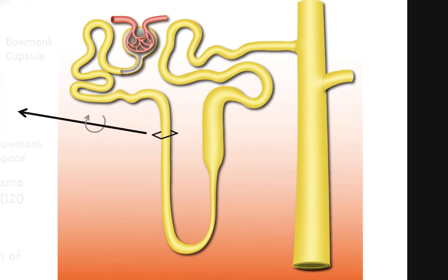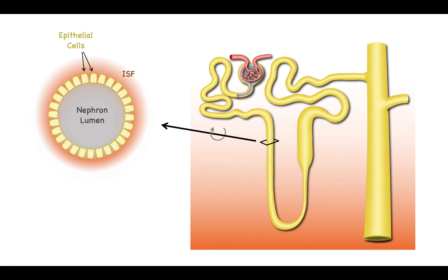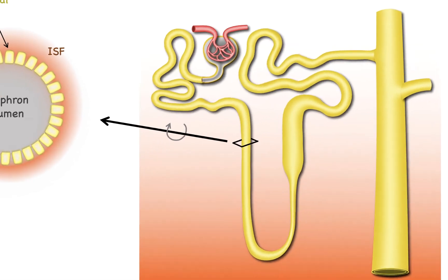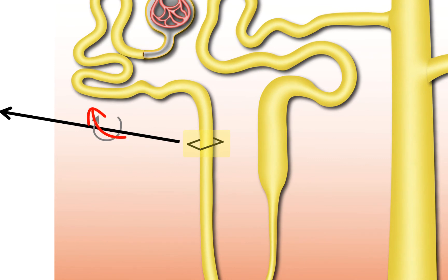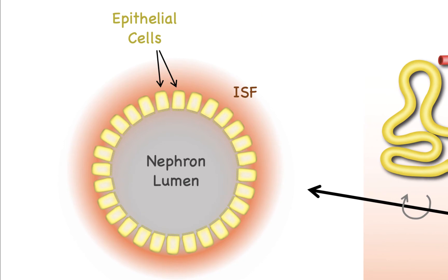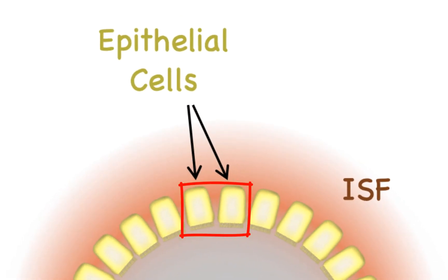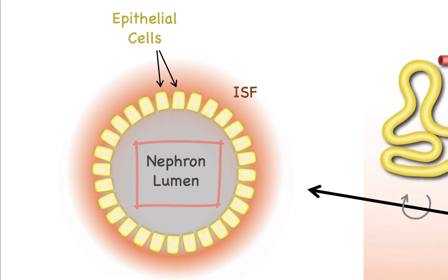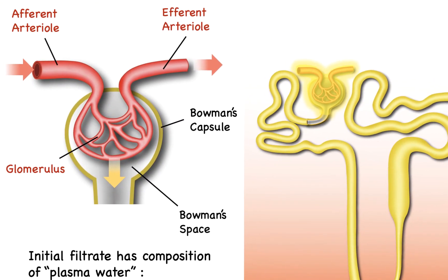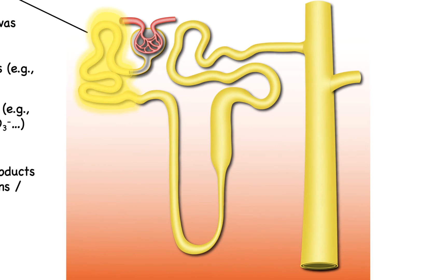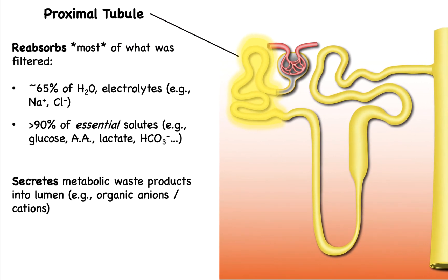Now that we have the initial filtrate formed by the glomerulus, the next steps involve processing that fluid through the various nephron segments. If you were to take a cross-section of the nephron and rotate it 90 degrees, there are three main regions: the nephron lumen or tubular lumen inside, surrounded by a layer of epithelial cells linked by tight junctions, which separates the nephron lumen from the extracellular fluid of the kidneys — the interstitial fluid or ISF. The hydrostatic pressure within Bowman's space then pushes that filtrate into the first main nephron segment: the proximal tubule.